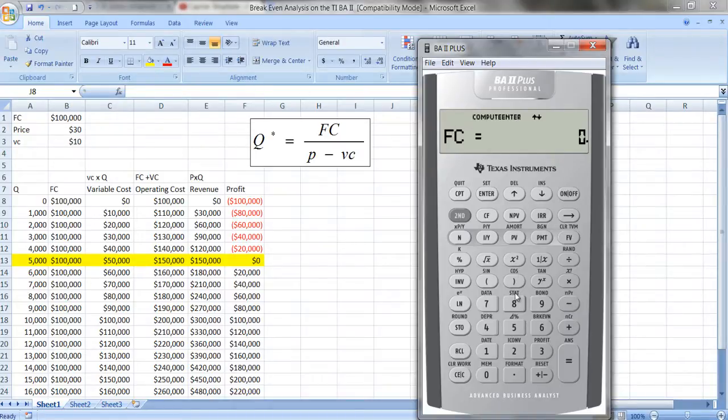So the fixed costs, let's put in the numbers here. This is $100,000. And you have to hit enter so you see that equal sign to make sure it registered. And you can go with the down arrow key here. My variable costs we said are 10. Again, hit enter. And the price we're charging is 30.